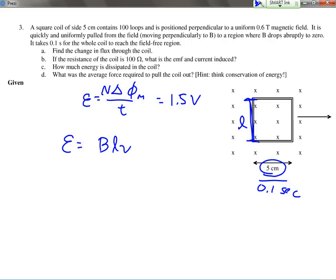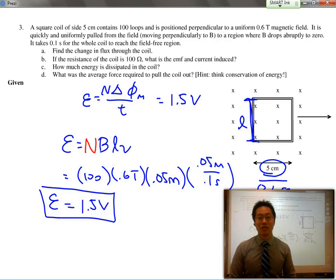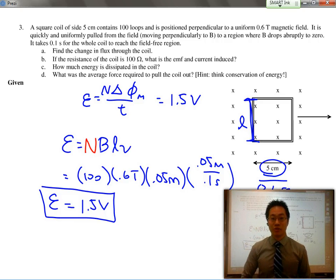So, if we were to take the extra work, I just want to prove that both formulas do work for this scenario. I would have to add an N, because there are 100 loops in this case. So, equal to 100 loops, times the magnetic field of 0.6 teslas, times the length of the wire that's being pulled, 0.05 meters, times the velocity, which is really 0.05 meters divided by 0.1 seconds, we would still end up with 1.5 volts. So, either method is acceptable for this case, it just depends on the problem situation.